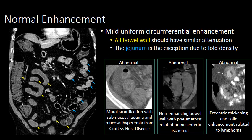When thinking about normal enhancement patterns of the small bowel, we want to see uniform circumferential enhancement. All of the bowel wall should have similar attenuation, except for the jejunum, which often appears thicker and more hyper-enhancing — again due to its high fold density.